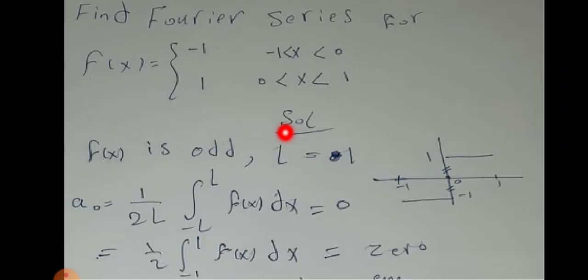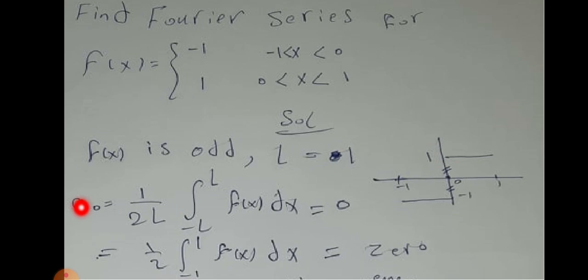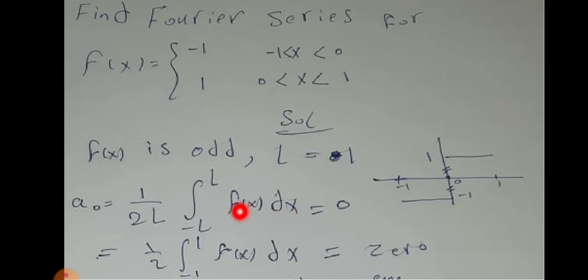In Example 2, f(x) is another piecewise function defined over the interval negative 1 to 1 — find its Fourier series. This function is odd because it is symmetric about the origin. Therefore a₀ equals one over 2l times the integral from negative l to l of f(x) dx, with l equal to 1. Since f(x) is odd and the integration is symmetric from negative 1 to 1, a₀ equals zero without any further calculation.